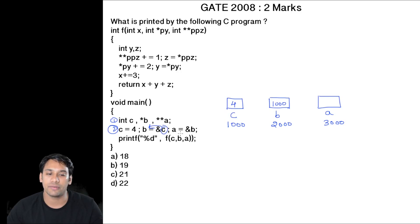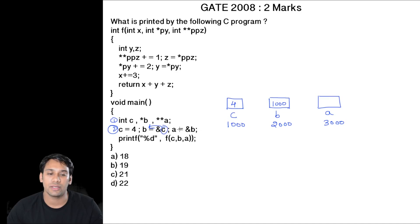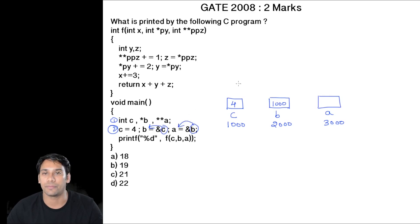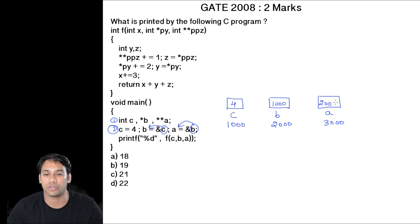In the next statement, we are having a = &b, that means we are going to store the address of pointer b into a. The address of b is 2000, therefore a is now going to store 2000.